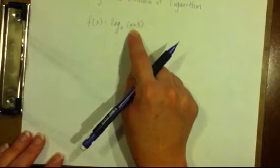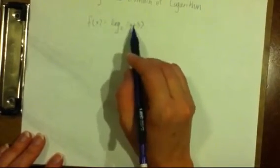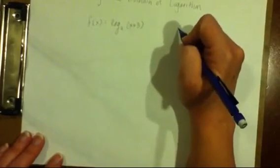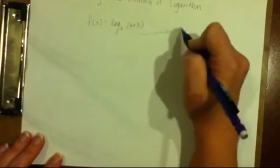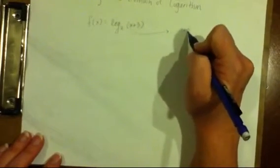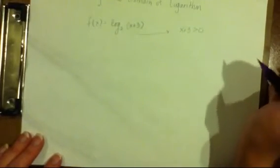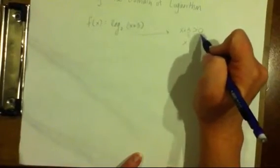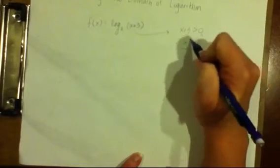So to find the domain of this, all we have to do is take the portion that would be plugged into the logarithm, and set it greater than 0. So we're going to take that part right there and set that greater than 0, and I think I said equal to, which was not correct, just greater than 0 because it cannot be 0. So we subtract 3 from both sides, and x must therefore be greater than negative 3. There's the domain.